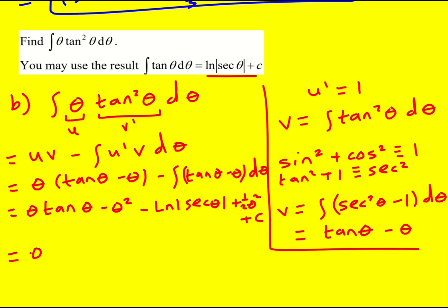So we're pretty much there. Just tidy it up. So theta tan theta minus ln sec theta. And I've got minus theta squared plus a half theta squared. It's going to become minus a half theta squared plus c. Nice integral.